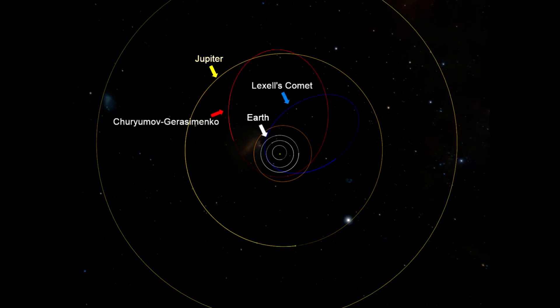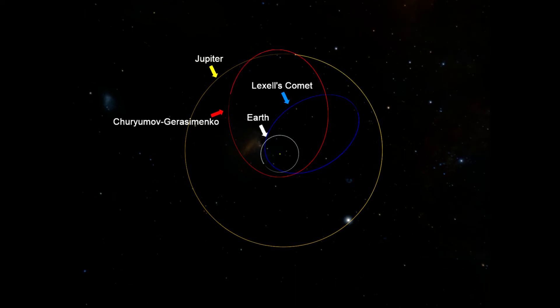For example, Lexell's Comet and Churyumov-Gerasimenko both began as Kuiper Belt objects that were pulled inward by the gas giants. Notice how these comets orbit in the same counterclockwise direction as the planets. This is called a prograde orbit.